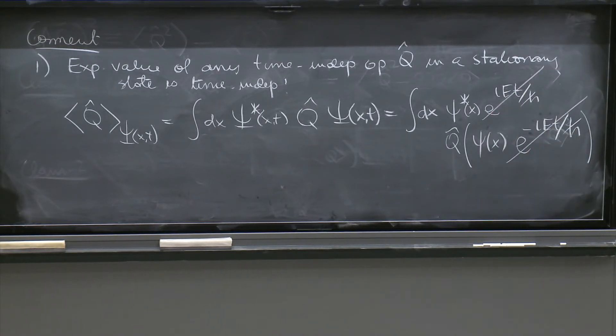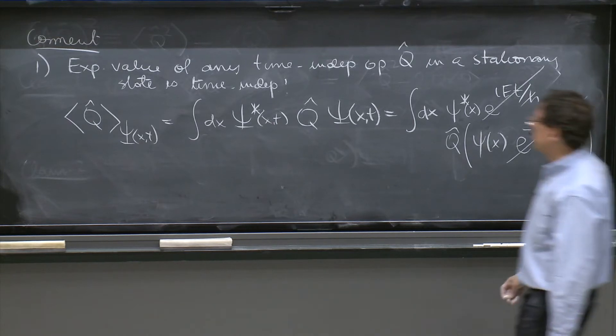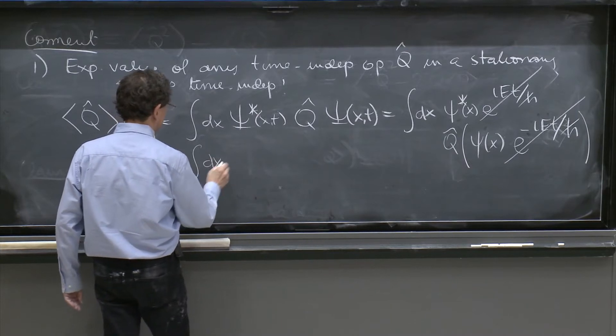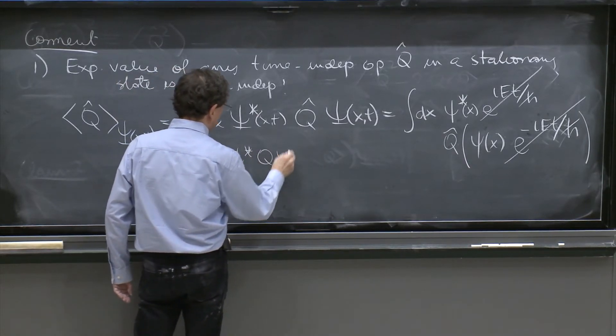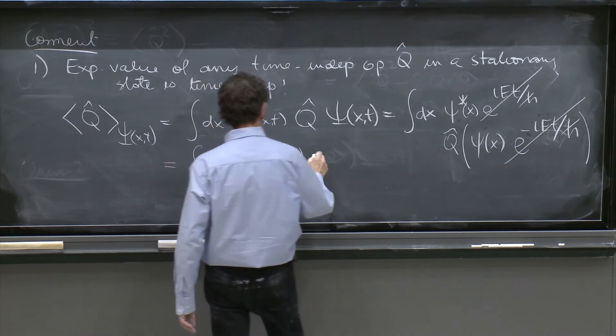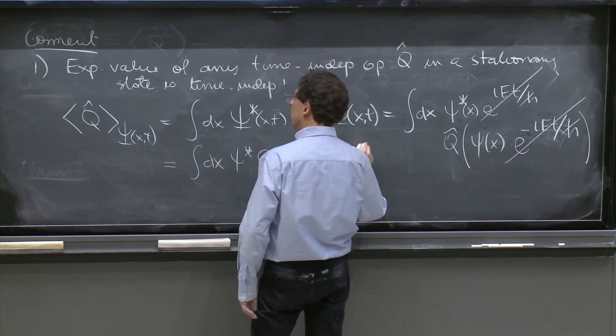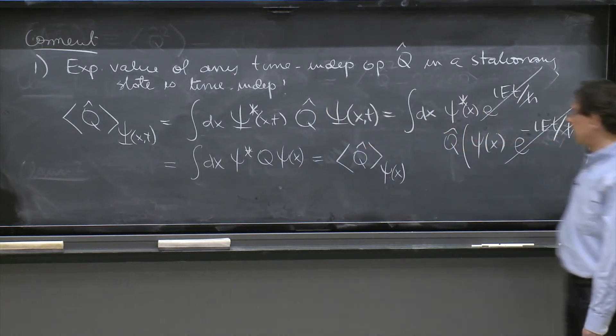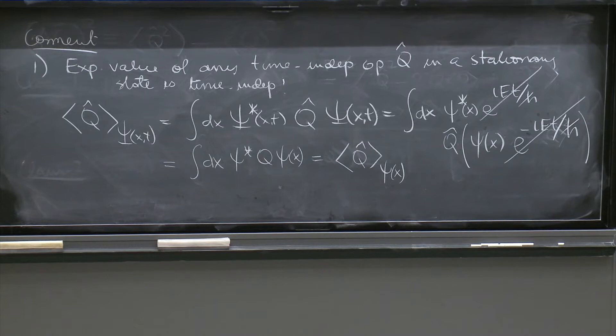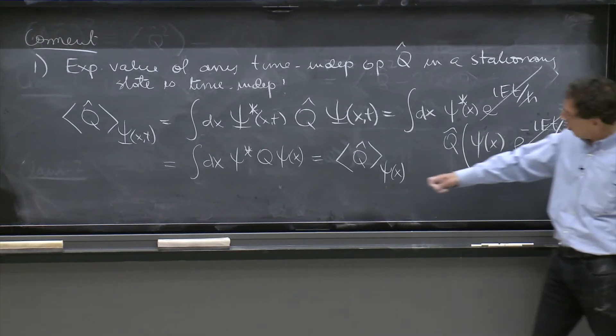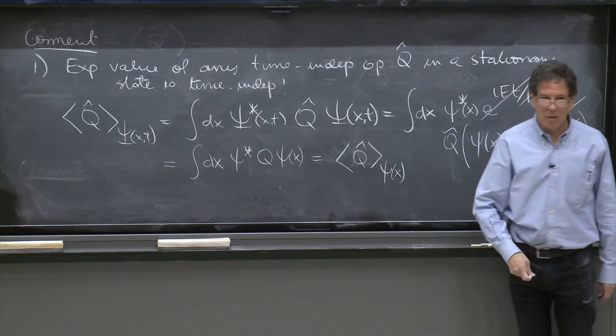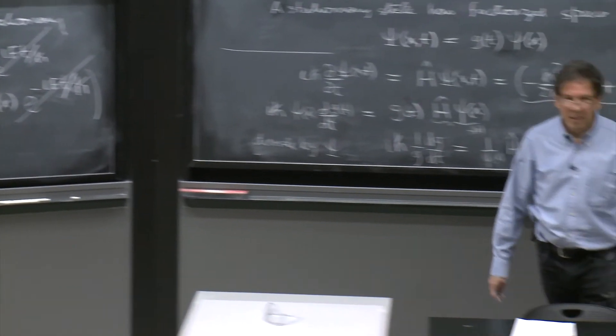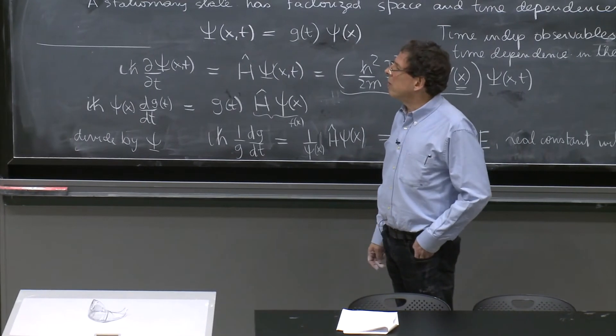The time dependence completely disappears. And in this case, you just get this is equal to integral dx of psi star Q hat psi, which is the expectation value of Q on little psi of x. Which is clearly time-independent because the state has no time anymore and the operator has no time. So everybody lost their time and we're in good shape.